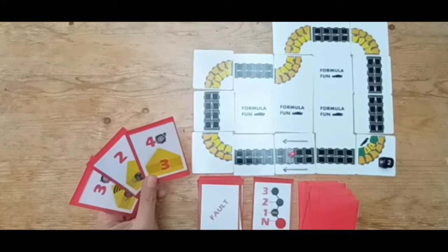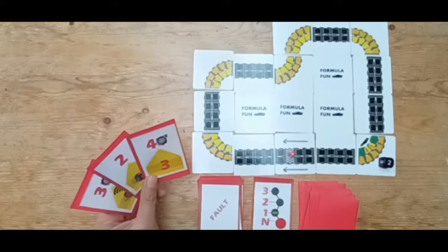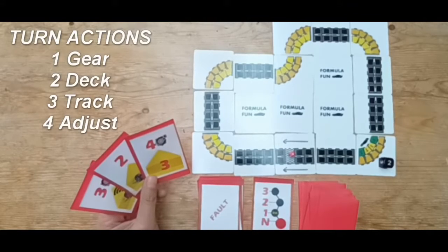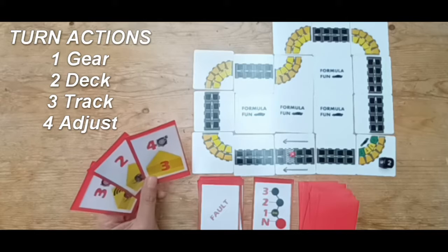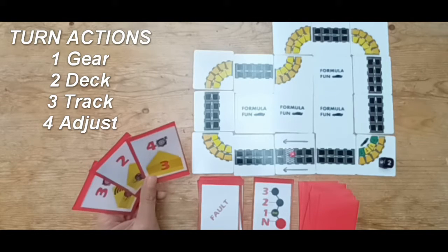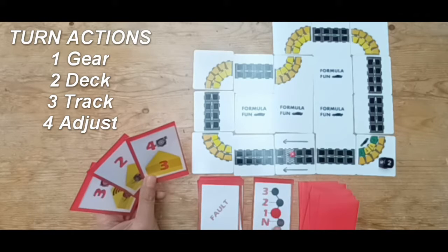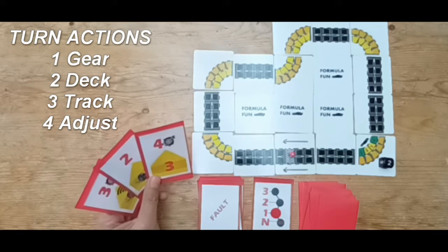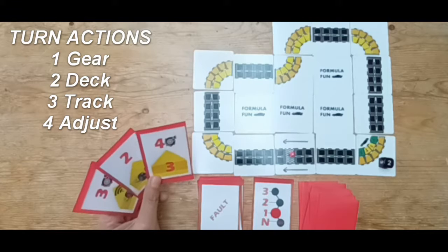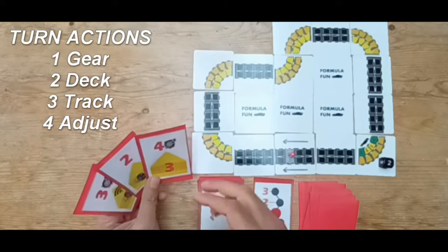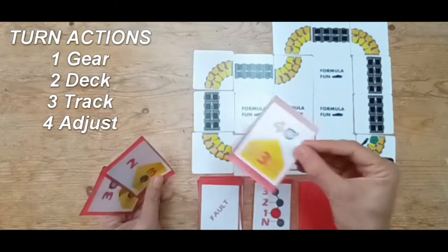Let's go through a typical turn in Formula Fun. Every turn goes through the same four actions: gears, deck, track, adjustment. In my racing hand I've got three cards. We'll go through the first action, so it's gears. I'm gonna put my gears up one to first gear, which means I can play a maximum of one card from my racing hand. I'm going to play this four to give us a good start.